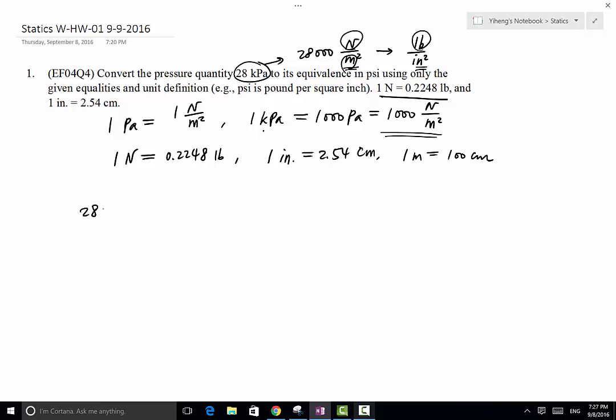We want to convert 28,000 N per meter squared. We want to convert between meter and centimeter. So we're going to start with this equality and we're going to write the conversion coefficient. Because we're trying to get rid of meter,